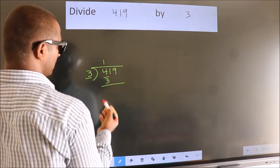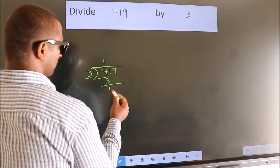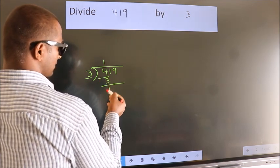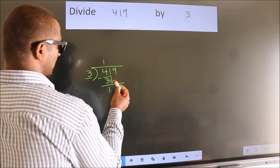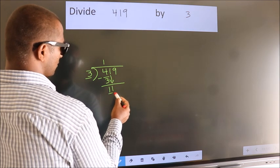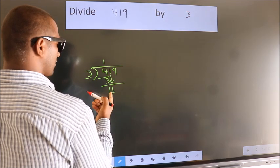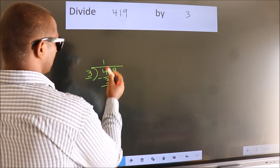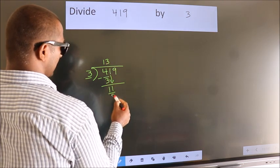Now, we should subtract. We get 1. After this, bring down the beside number. 1 down, so 11. A number close to 11 in the 3 table is 3 3s 9.